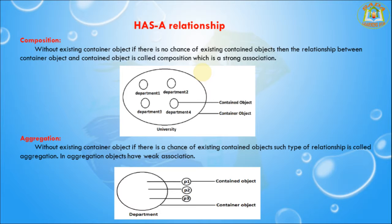Next, aggregation — without an existing container object, if there is a chance of the contained object existing, such a type of relationship is called aggregation. In aggregation, objects have a weak association. For example, within a department there may be several professors. Whenever we close the department, there may still be a chance of existing professor objects — without the department object. That relationship is called aggregation, where objects have a weak association.